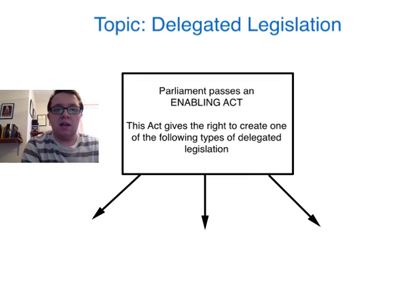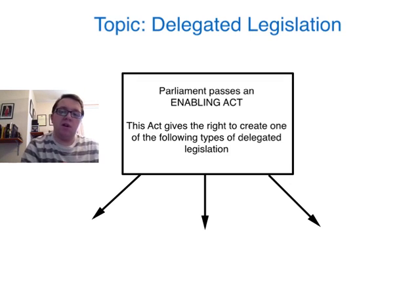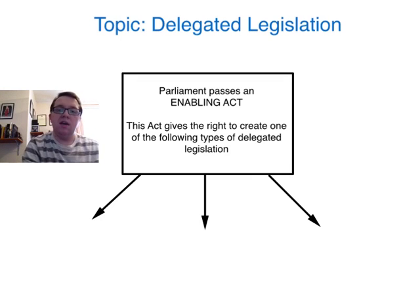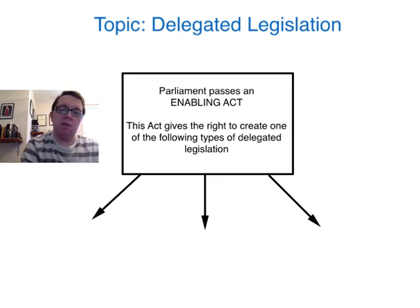So it all begins with Parliament passing what is known as an Enabling Act. The Enabling Act gives specific details as to what type of delegated legislation is going to be created, who is going to create it, and also specifies how that power can be exercised. This is an important control on delegated legislation because without it, effectively that individual or local council could actually abuse the power and exercise it in a way that Parliament hadn't foreseen. So the Enabling Act is really those rules and regulations laid out for them.